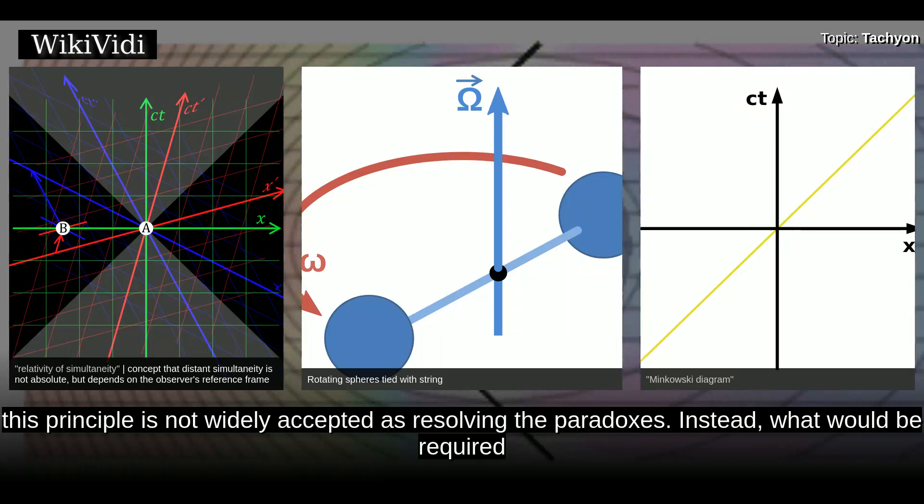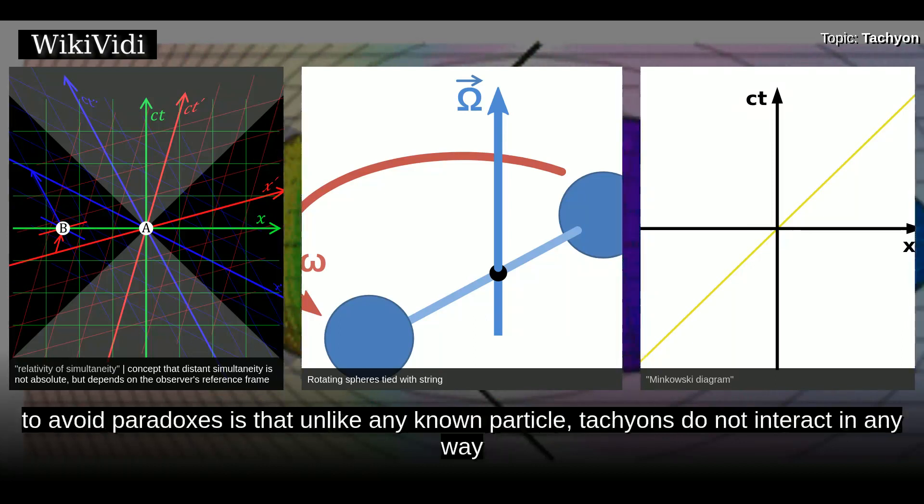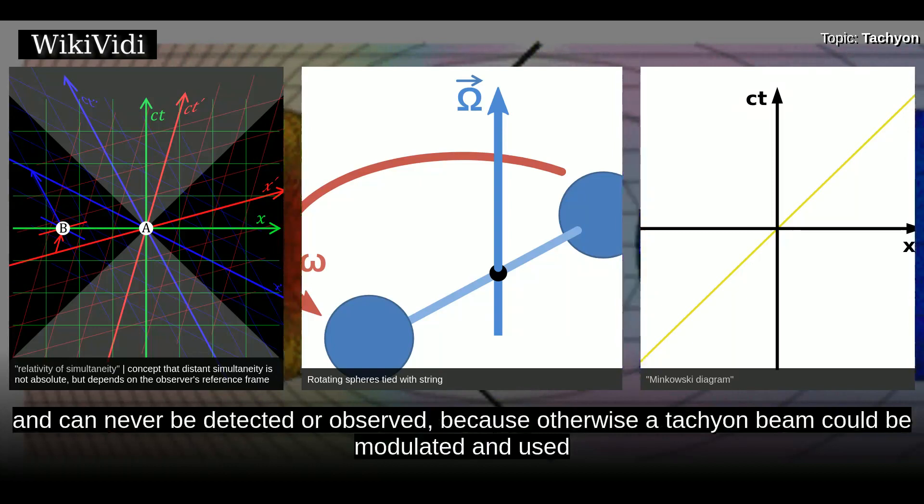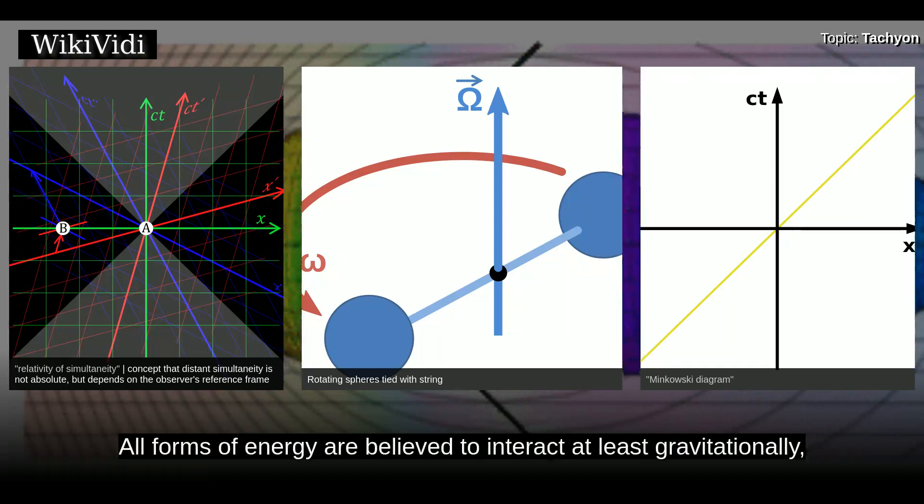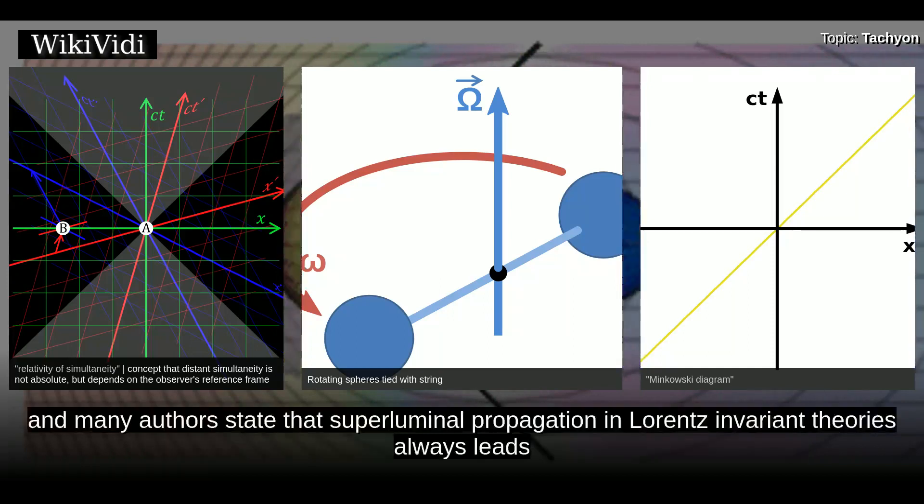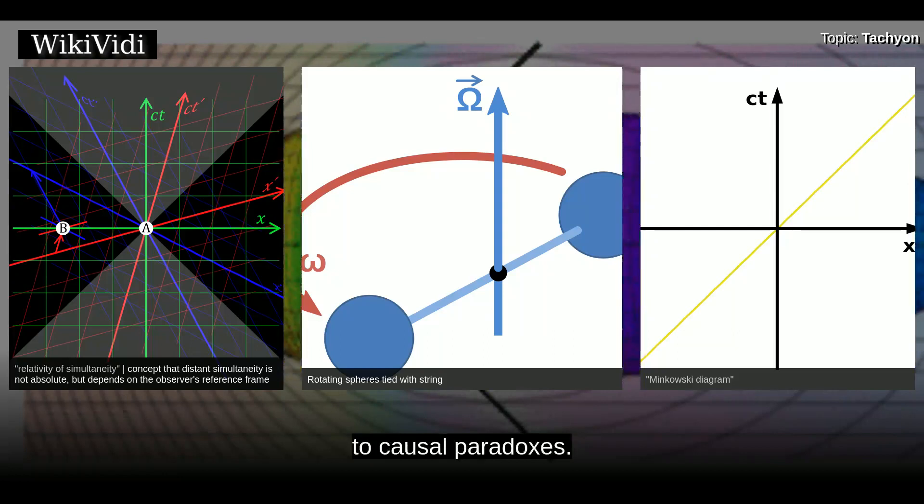Instead, what would be required to avoid paradoxes is that, unlike any known particle, tachyons do not interact in any way and can never be detected or observed, because otherwise a tachyon beam could be modulated and used to create an anti-telephone or a logically pernicious self-inhibitor. All forms of energy are believed to interact at least gravitationally, and many authors state that superluminal propagation in Lorentz invariant theories always leads to causal paradoxes.